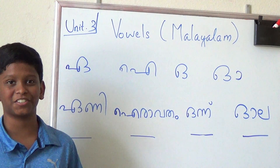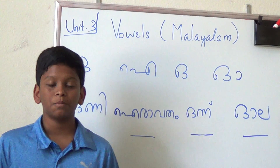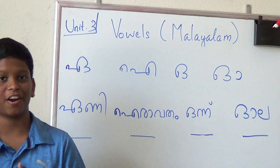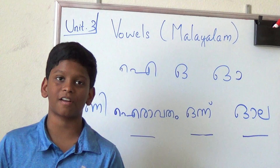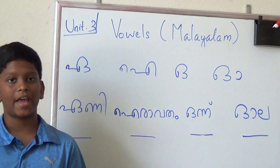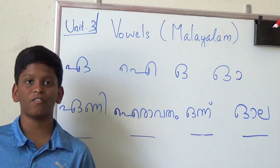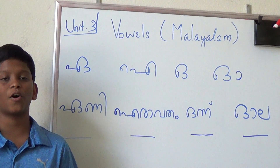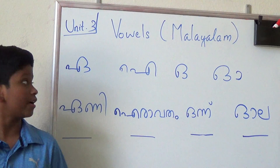Welcome back to my brother's show. Please don't get confused. I'm Maureen, our Jewish children's brother. He went over the first eight vowels of Malayalam. I'm going to go over the next four.